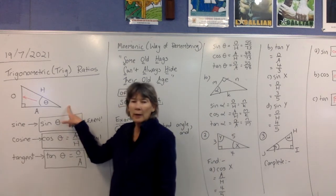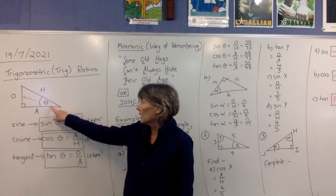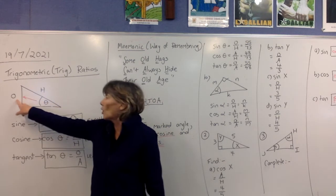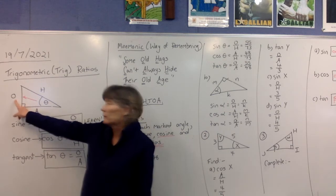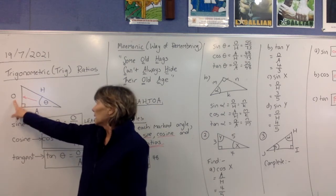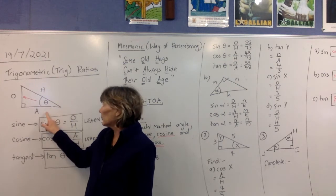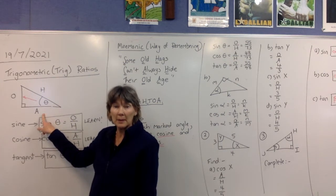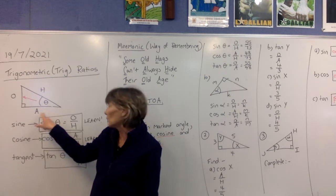So we've got a right angle triangle here. I've marked an angle theta, and for that angle theta, I've marked its opposite side, which I'm now just going to call O. It's opposite the right angle, and the side we haven't marked yet must be the adjacent side, which I'm calling A.